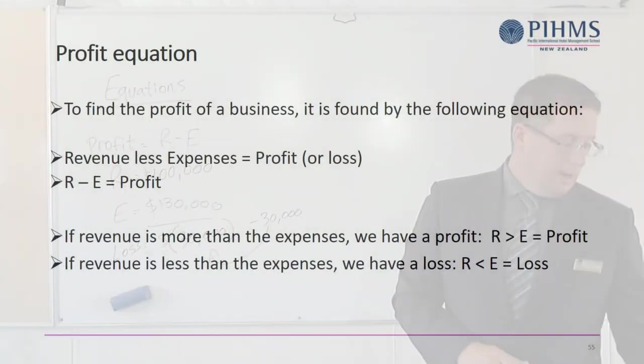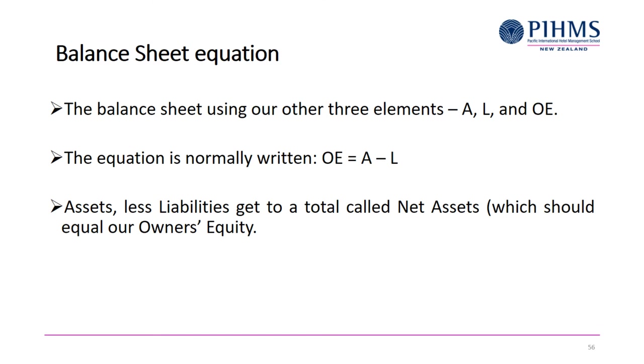Okay, so the other equation uses the other three elements, and this is what we find on the balance sheet. We've already looked at this equation in owner's equity, but the equation goes: owner's equity is equal to assets minus liabilities. So assets less liabilities gets our thing called net assets, which should equal our owner's equity.